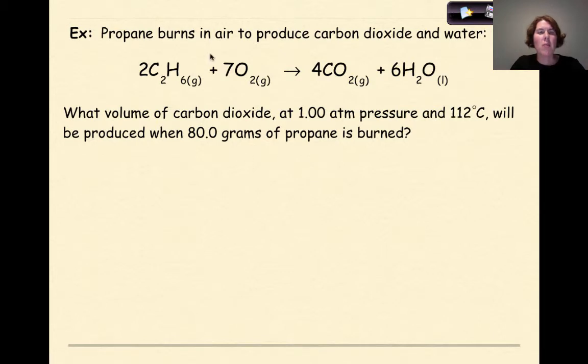Let's look at another example. Propane burns in air to produce carbon dioxide and water, another combustion reaction, and we have a nice balanced chemical equation here for us to use. What volume of carbon dioxide at one atmosphere pressure and 112 degrees Celsius, oh, that's a bummer, that's not at STP, will be produced when 80 grams of propane is burned? Well the first thing that I want to do here is I need to look at my 80 grams. I have 80 grams of propane, so I want to get this to moles of carbon dioxide.